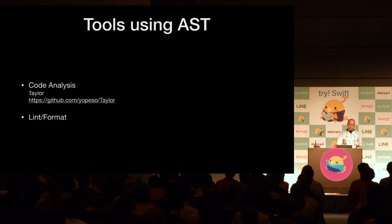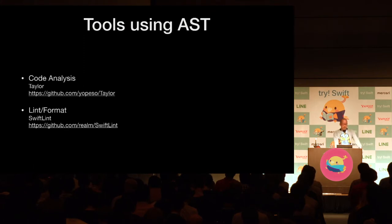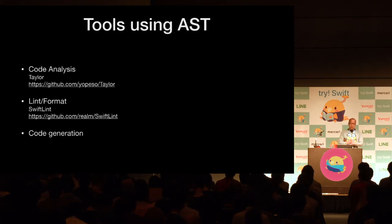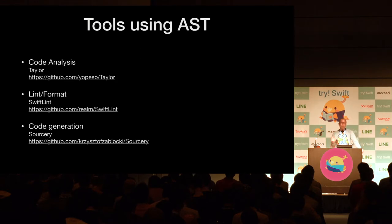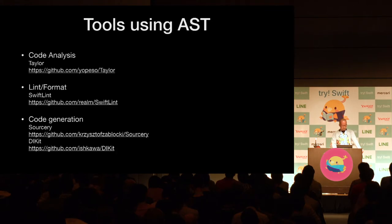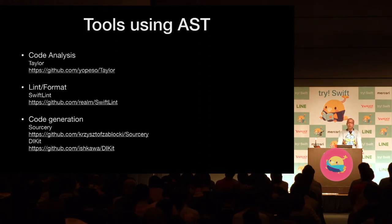Lint and code format are also typical usages of AST. SwiftLint uses AST generated by SourceKit. The topic of this talk is metaprogramming, so I have to talk about code generation using AST. Sourcery provides the basis for code generation using AST, freeing you from writing boilerplate code like implementing Encodable, Codable, and so on. DIKit is a dependency injection framework that performs dependency injection by code generation.